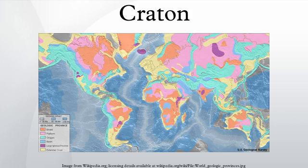Cratons have a thick crust and deep lithospheric roots that extend as much as several hundred kilometers into the Earth's mantle. The term craton is used to distinguish the stable portion of the continental crust from regions that are more geologically active and unstable.